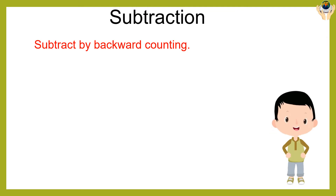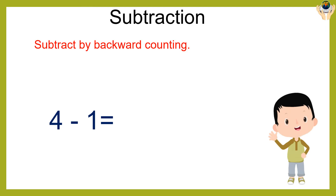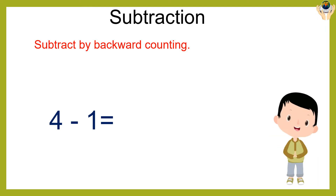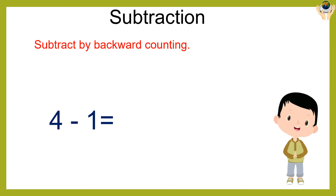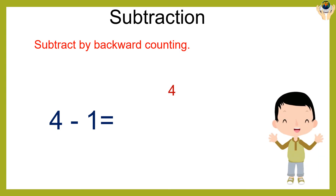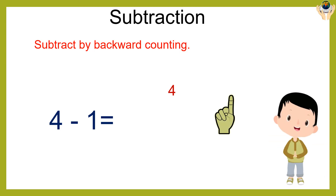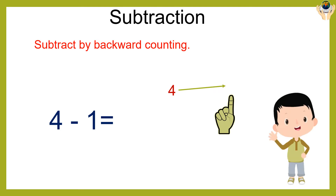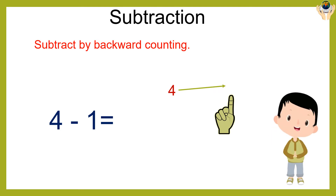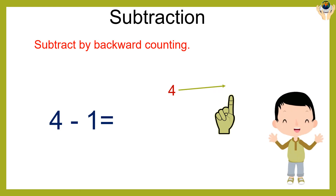Now, four minus one is equal to what? Keep the bigger number in your mind and the smaller number on your finger. The bigger number is four, so keep four in your mind and start backward counting. Four in the mind, one on the finger: four... three. The answer is three.